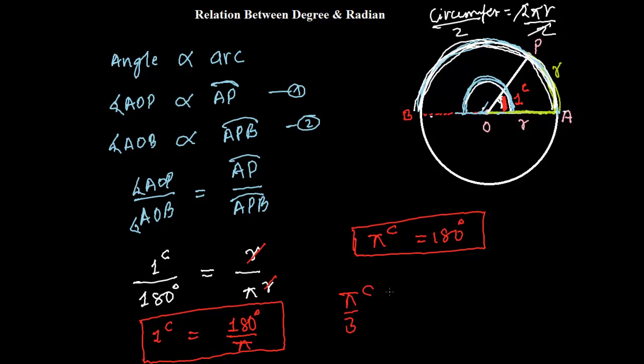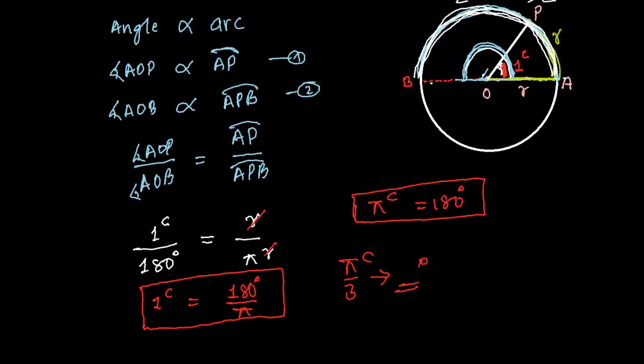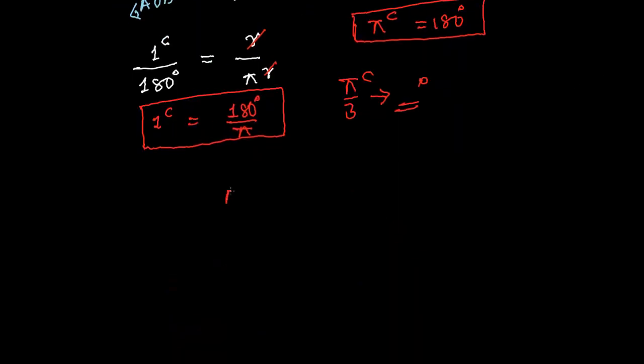Now, see how I'm going to convert π by 3 radians into the degrees. So, I got the relationship. π radian equals to 180 degrees. So, 1 radian will be 180 over π degrees. So, π over 3 radian will be 180 over π.